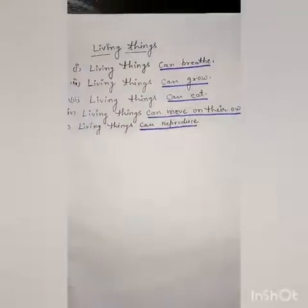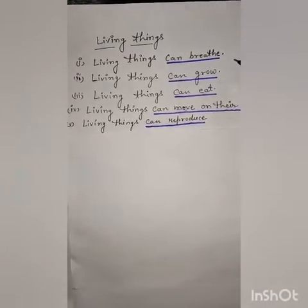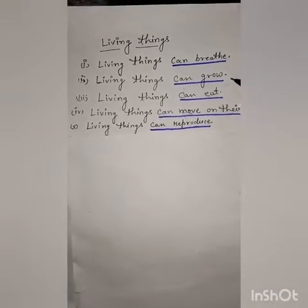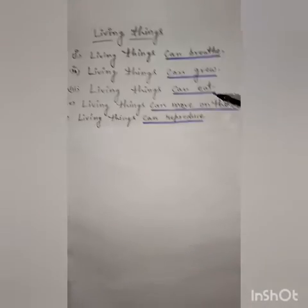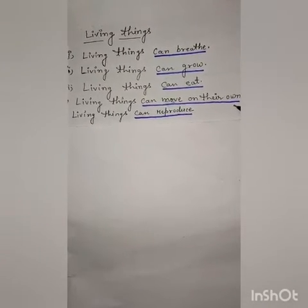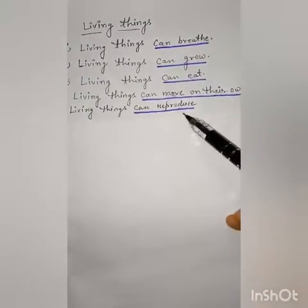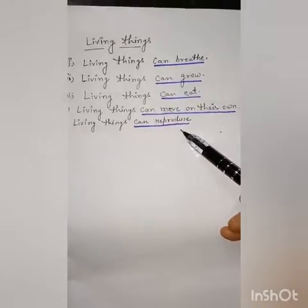Now, how can we identify whether things are living or non-living? Living things can breathe — saji vastu saans le sakti hain. Living things can grow — badh sakti hain. Living things can eat — kha sakti hain. Living things can move on their own — ek jagah se doosri jagah khud se ja sakti hain. And living things can reproduce — prajanam kar sakti hain — iska matlab ki woh chhote bachon ko janam de sakti hain.